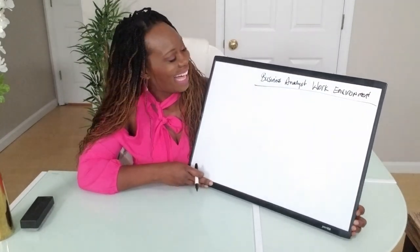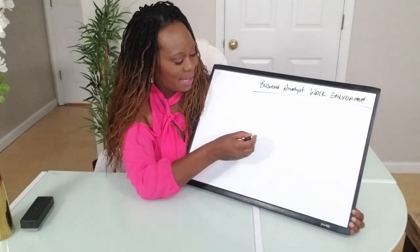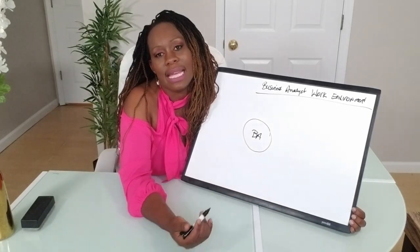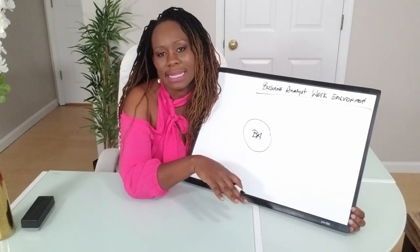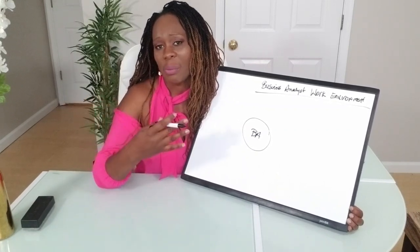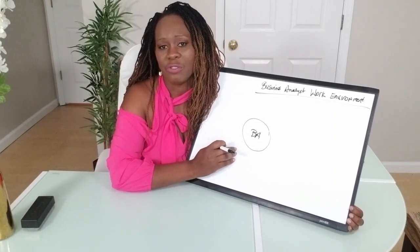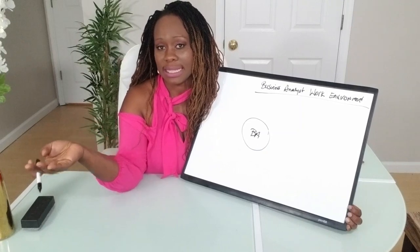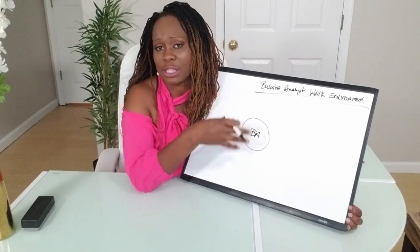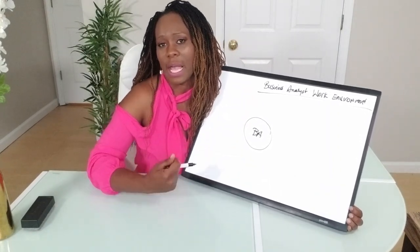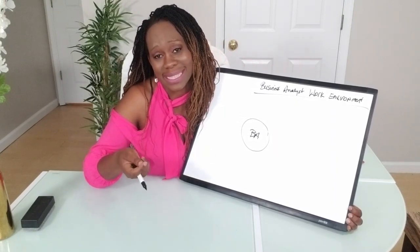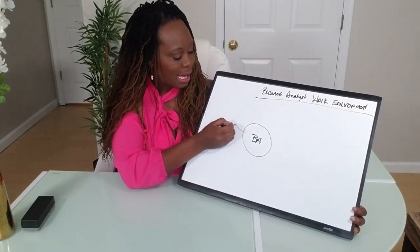Let's say that you are the business analyst — I'm going to put you in here as the BA. In some companies you have both a business analyst and a product owner, which I'll cover separately. For now, I'm focusing on environments that have just the BA working in a product or project team, specifically the functional BA who is writing requirements for a software product or doing agile user stories.